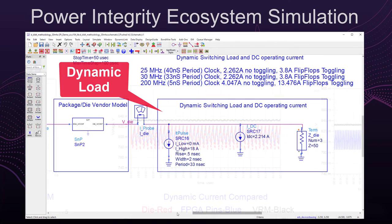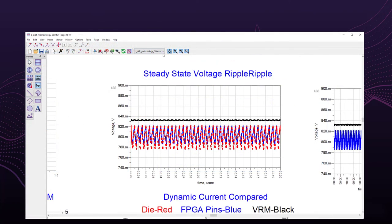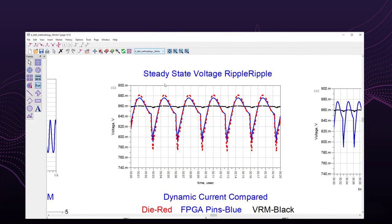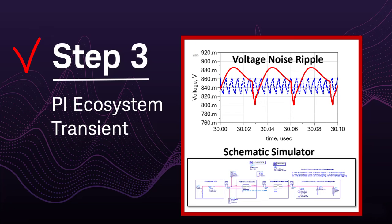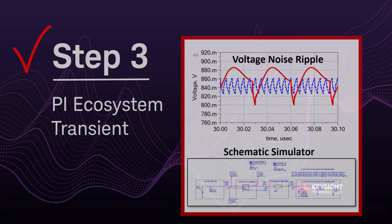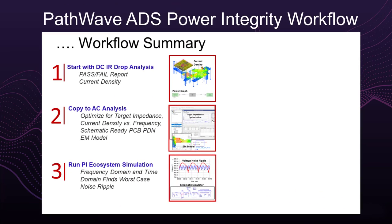Simulation makes it easy to change the dynamic load frequency to 200 megahertz. Comparing the simulated results confirms that a switching load at 30 megahertz has more voltage noise ripple and matches the measured results shown at the beginning of this video. This was a short demo of running a three-step power integrity analysis for worst-case noise using PathWave ADS with PI Pro.